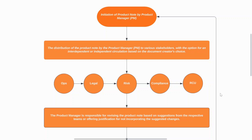Interdependent review is where teams sequentially review and approve the node — a structured approach ensuring comprehensive input from each team before it moves to the next. On the other side, independent review allows simultaneous feedback from multiple teams, promoting collaboration and agility in the review process.